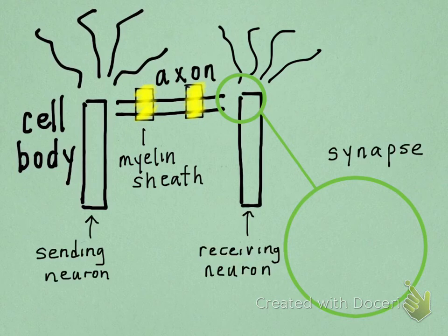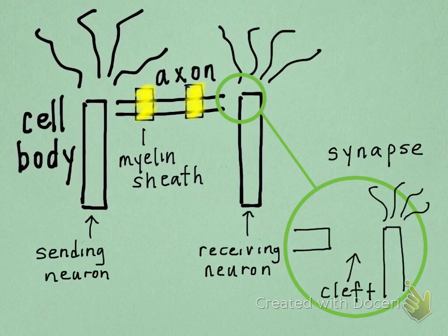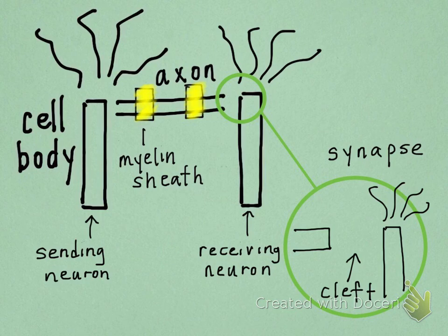The large green circle shows an enlarged drawing of the synapse, the area where the axon of the sending neuron meets the receiving neuron. The synapse is where the sending neuron communicates with the receiving neuron across the synaptic cleft — the small gap between the two neurons. It is in this synaptic cleft where synaptic vesicles release neurotransmitters that bind to the receptors of the receiving neuron, completing the cycle of communication.